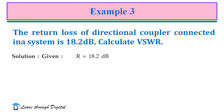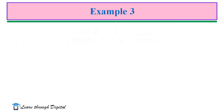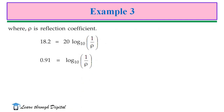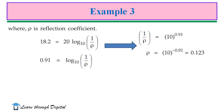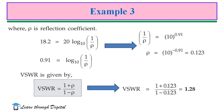We write R = 18.2 dB. The general expression for return loss is: 20 log(1 / rho) to the base 10, where rho is the reflection coefficient. Substituting R = 18.2 dB, we find the reflection coefficient is 0.123. Now, VSWR = (1 + rho) / (1 - rho). Substituting rho = 0.123, we get VSWR = 1.28.